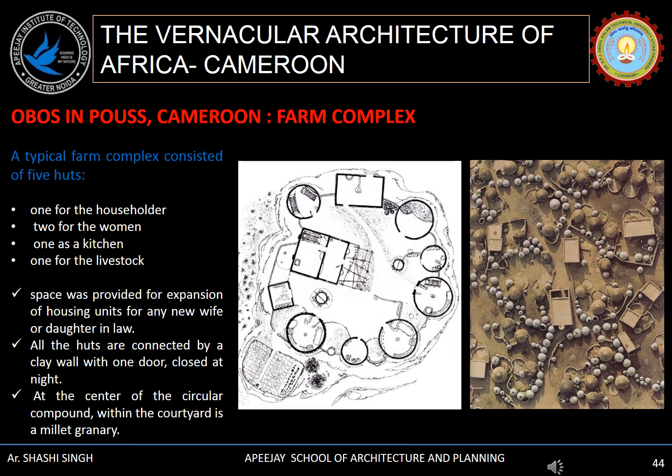A typical farm complex consists of 5 huts: one for the householder, two for the women, one used as a kitchen and one for livestock. All the huts are connected by a clay wall with one door closed at night, and at the centre of the circular compound within the courtyard there is a millet granary.